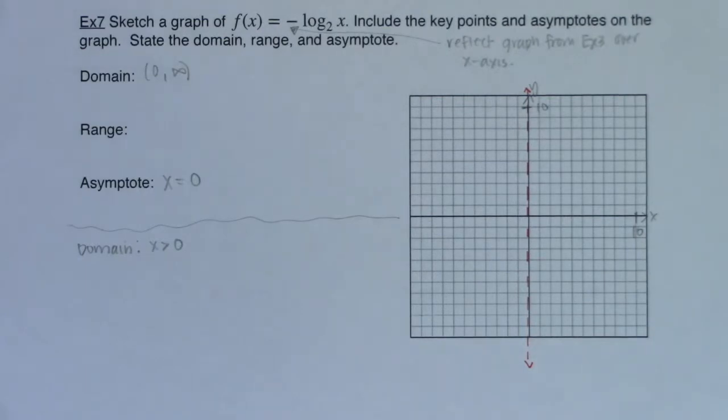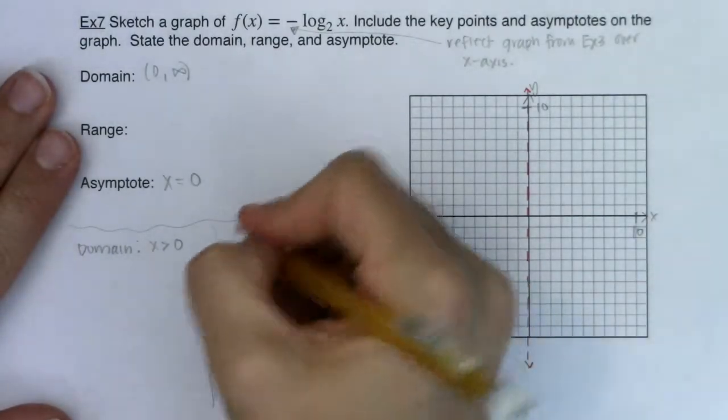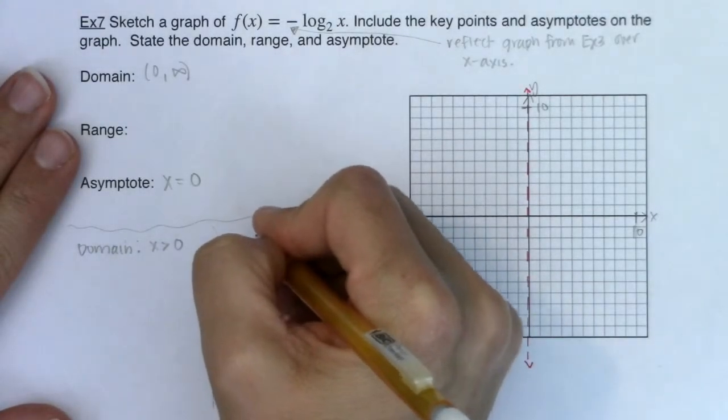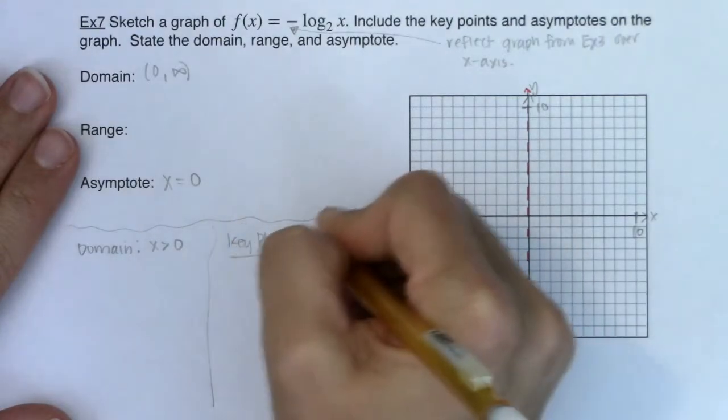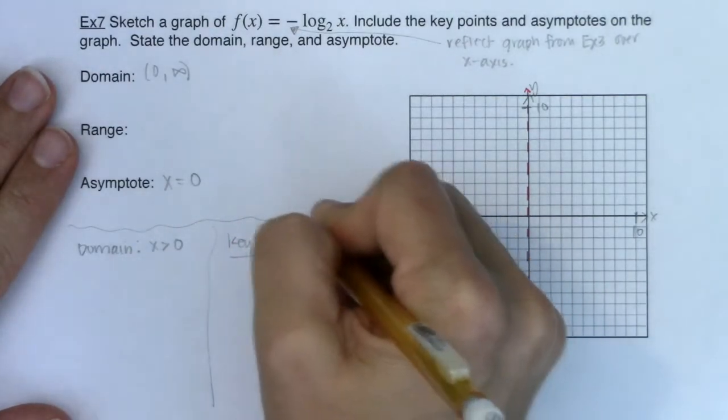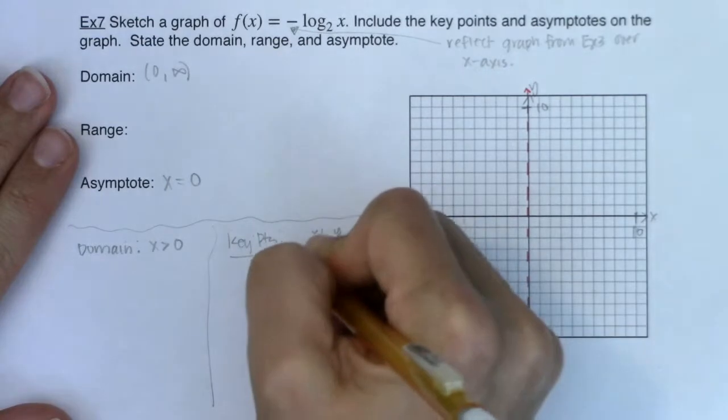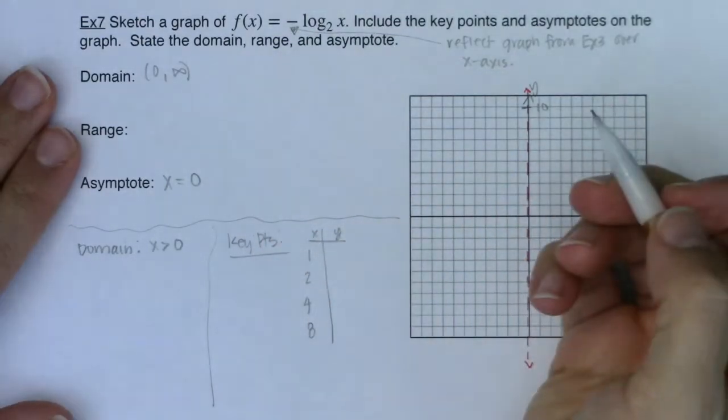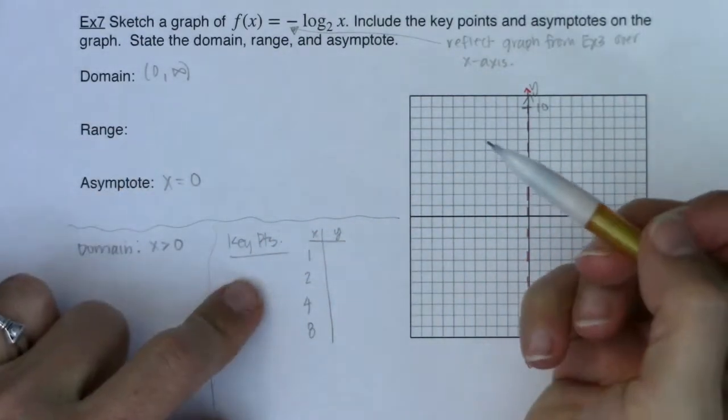Okay now I'm going to pick some key points. I've got a base of two so I'm going to use powers of two to help me out with this. So for key points like always I'm going to stick to the ones I've been using. I'm going to go one, two, four, and eight. So let's see what we get when we start plugging these in.